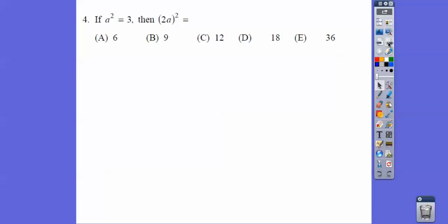A squared equals 3, so 2A squared, well, 2 squared is 4, A squared is A squared, so this is 4A squared. So 4A squared is going to be the same as 4 times A squared, and since A squared equals 3, 4 times 3 is 12.